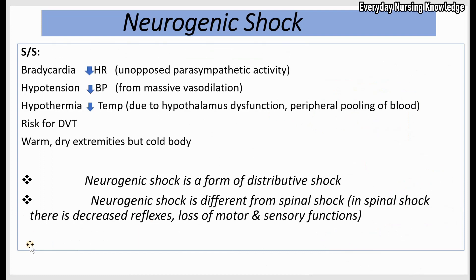Signs and symptoms of neurogenic shock include: bradycardia (decreased heart rate) due to unopposed parasympathetic activity — this is the only type of shock where you see bradycardia, as other shocks cause increased heart rate to raise blood pressure. Hypotension (low blood pressure) due to vasodilation. Hypothermia or decreased temperature due to hypothalamic dysfunction and peripheral pooling of blood, which reduces venous return. There is also a risk for deep vein thrombosis, and warm dry extremities with a lower core temperature.